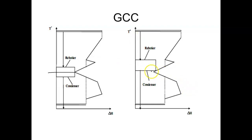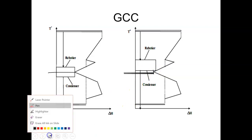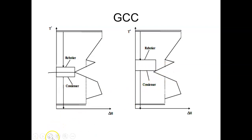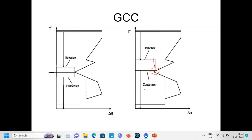Looking at the temperature values, it may seem like there is a good opportunity to integrate the column with the process. However, the overlapping between the available heat and the required amount is very small compared to the actual requirement. The only area where energy can be exchanged between the process and the condenser is limited, meaning only a small amount of energy can actually be saved. The rest must go to utility below the pinch point.